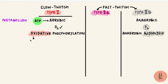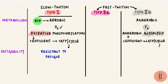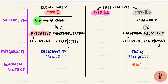Oxidative phosphorylation is more efficient and produces more ATP per cycle than anaerobic metabolism. So the slow fibers can work for longer without getting tired easily — they are resistant to fatigue. Anaerobic glycolysis produces lesser ATP per cycle; it's less efficient, so those fibers are more easily fatigable. The type 2b fibers get energy from stored glycogen, so their glycogen content is higher.